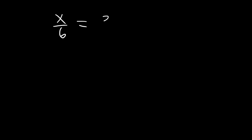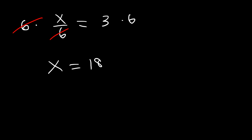Based on that example, if x divided by 6 is 3, what is the value of x? We multiply both sides by 6. On the left side, the 6 values cancel. On the right side, it's 3 times 6, which is 18. So x is equal to 18. And 18 divided by 6 is 3.